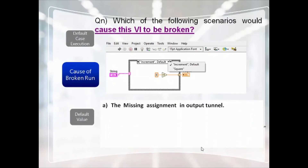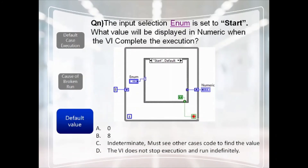It is very important to check whether the tunnel is managed properly. The answer for this question is: missing assignment in the output tunnel. The third and final CLAD topic is the default value. An enum is used only for selecting cases; it does not provide a source value to the indicator. The indicator is wired with the shift out, and the shift out value is connected with the start default case structure.